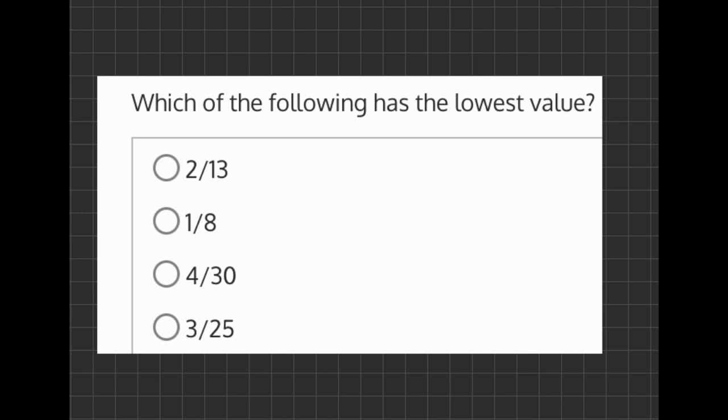Usually the easiest fraction to use as an anchor is if you have a 1 in the numerator, meaning we'll use 1/8 as our anchor and multiply it by 8 to turn it into 1. That will be a very easy comparison to do.